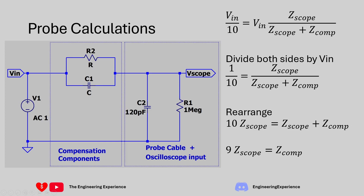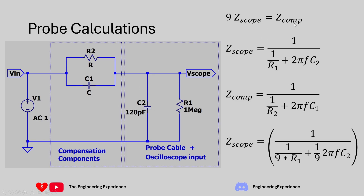Now filling in the expressions for Z_scope and Z_comp, each network consists of two parallel components — a resistor and a capacitor. The equation for parallel impedance gives: total impedance equals 1 over (1/R + 1/(1/2πfC)). This applies to both the scope network and the compensation network, so we substitute both parallel combinations into the equation 9·Z_scope equals Z_comp.